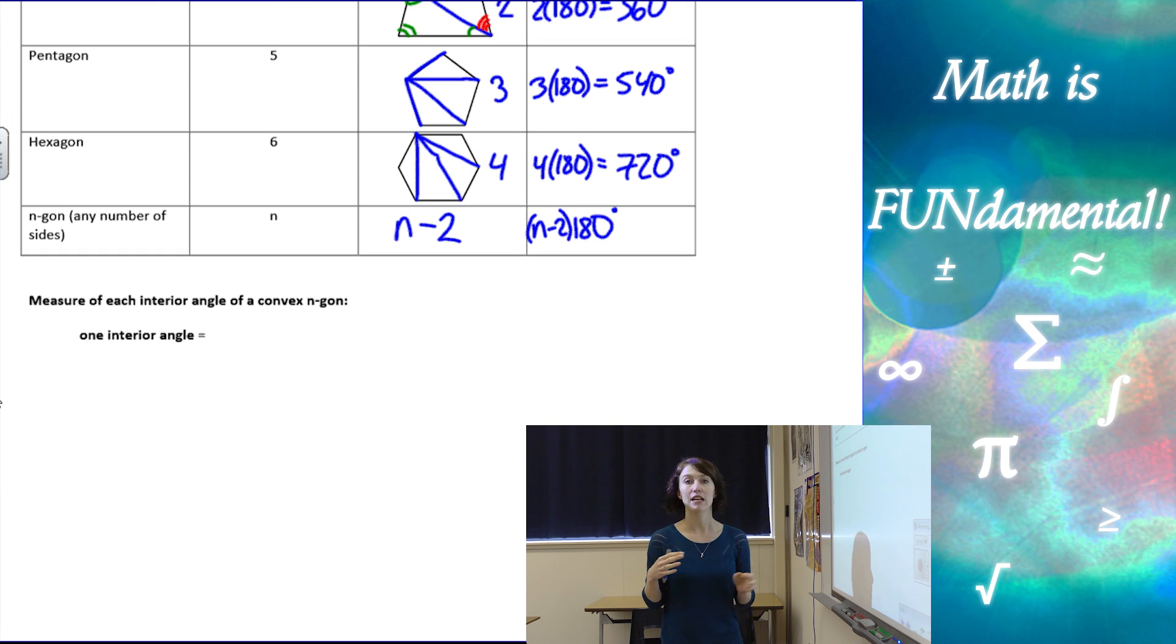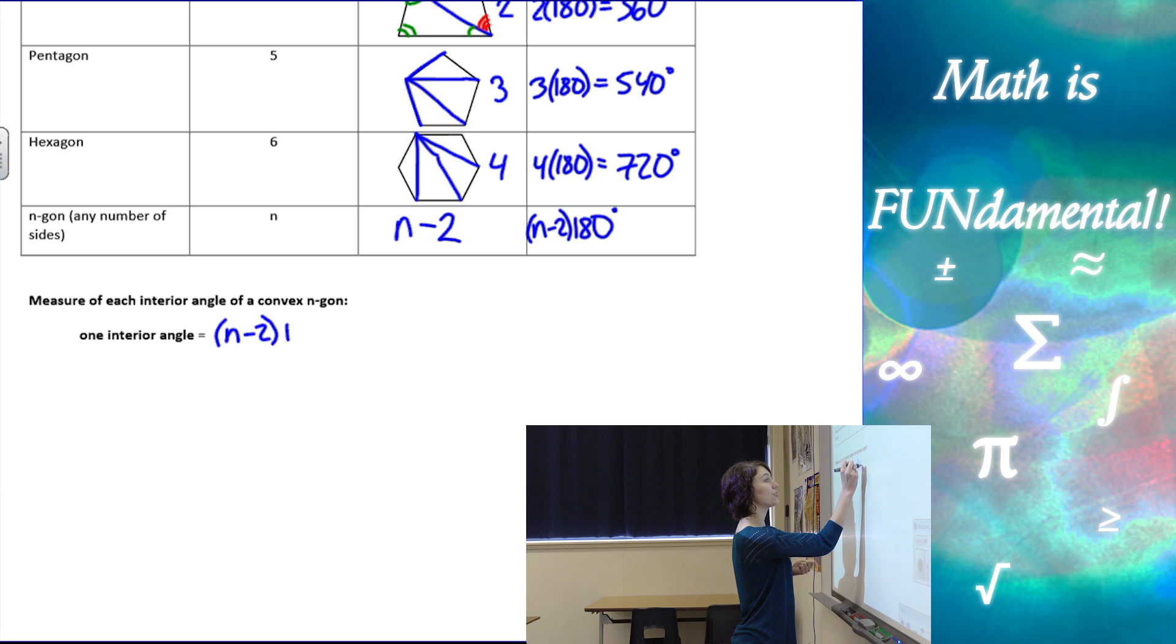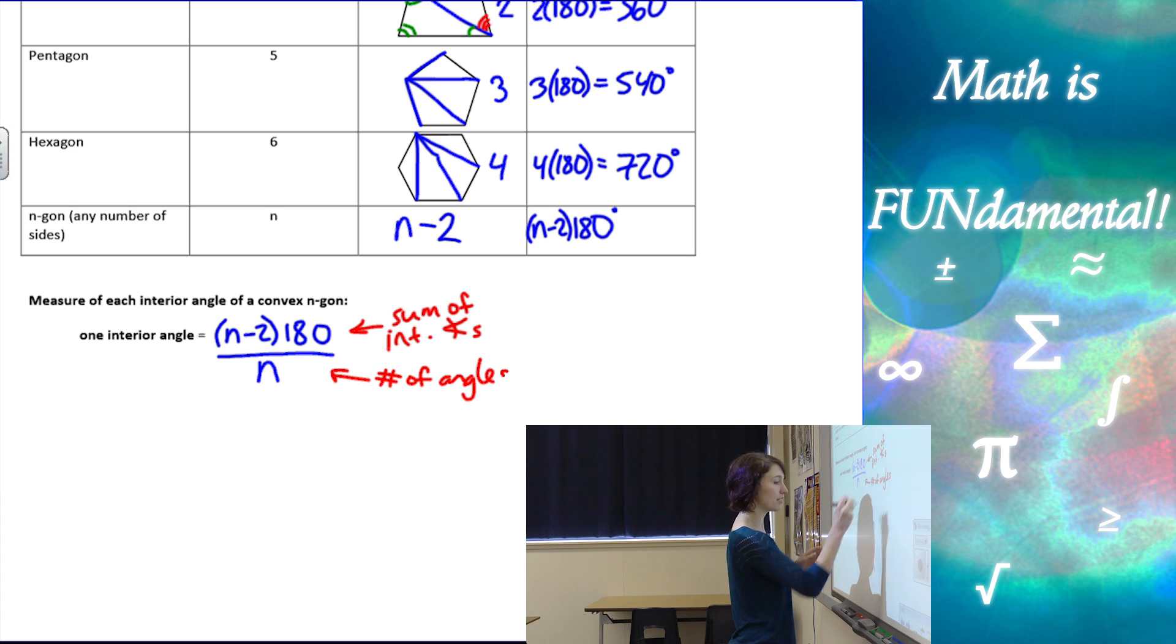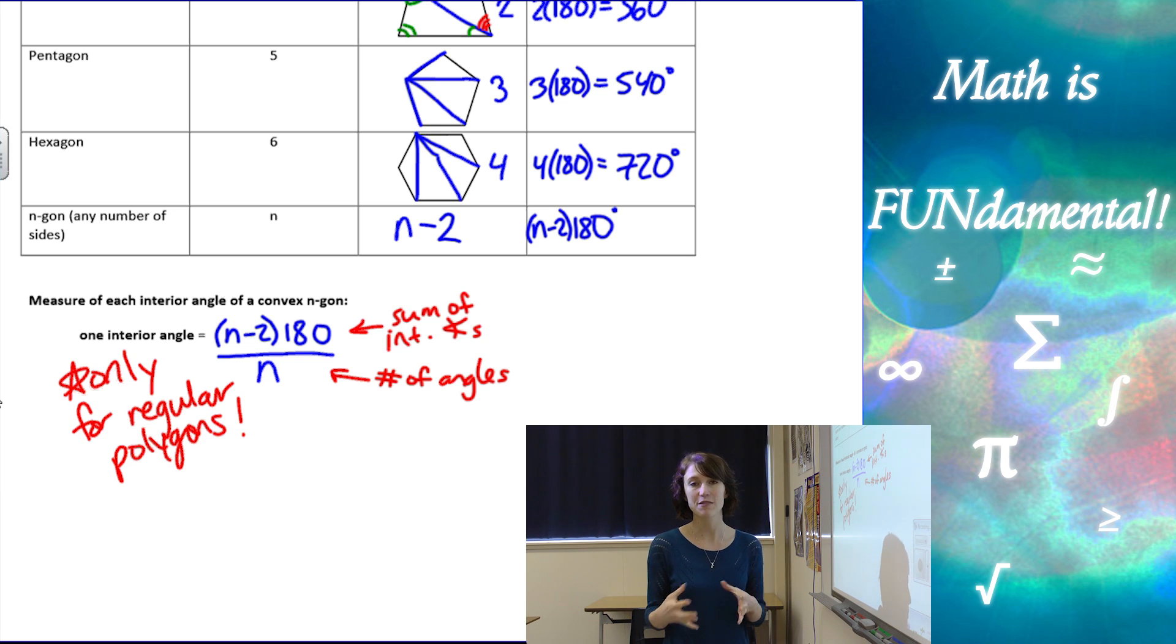We can take that one step farther and figure out the formula for finding one interior angle of a regular convex polygon. If I do the sum of the interior angles, (n-2) times 180, and then divide it by the number of sides, which is the same as the number of angles. This is the sum of interior angles, and this is the number of angles. If I take the sum and divide it equally between all the angles, I'll get the measure of one of those angles. But note that this only works for regular polygons.